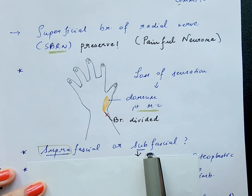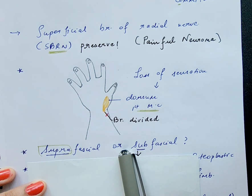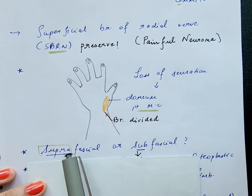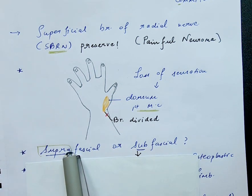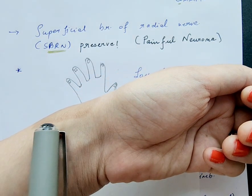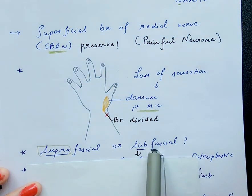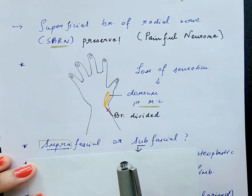Is the flap harvest of a radial artery forearm flap suprafascial or subfascial? In earlier times it was almost always subfascial, but this led to exposure of tendons distally and damage to the paratenon, causing loss of the split skin graft applied at the donor site. Now in most cases the harvest is done suprafascially — that is, above the fascia — maintaining the fascia over the tendons distally, and going subfascial more proximally once the pedicle is reached, to harvest the septum from where the perforators arise.